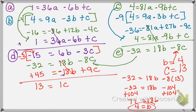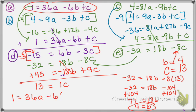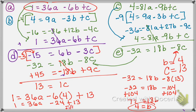Now I've got to find what a is. I can go back to the original equation a: 1 equals 36a plus b times negative 6 plus c. I found b is 4 and c is 13. So negative 6 times 4 gives me negative 24 plus 13. So 36a equals 1 minus negative 24 plus 13, which is 1 minus negative 11, giving 12 equals 36a. Dividing by 36, I get a equals 1/3.